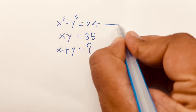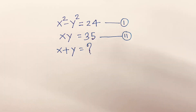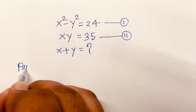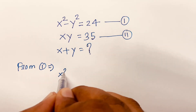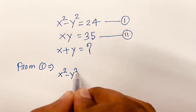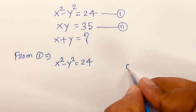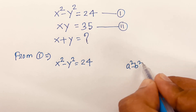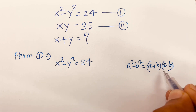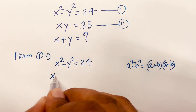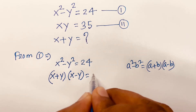This is equation 1 and this is equation 2. From equation 1, we know that x squared minus y squared equals 24. We know that a squared minus b squared equals (a + b)(a - b). According to this rule, I can say x plus y times x minus y is equal to 24.